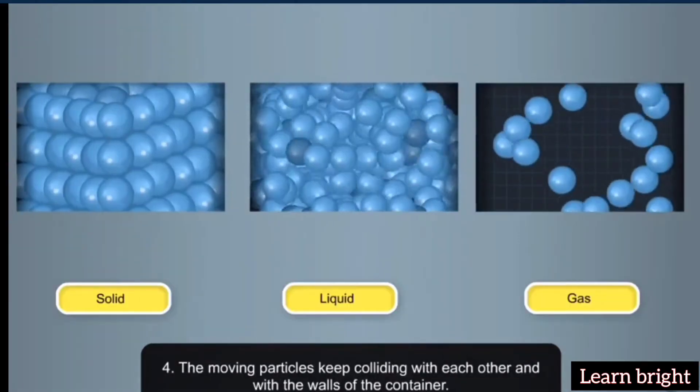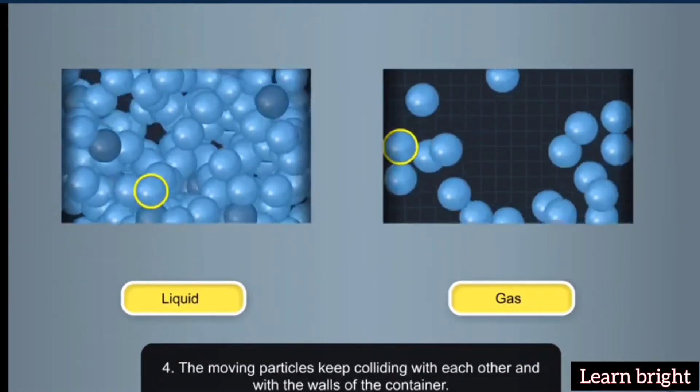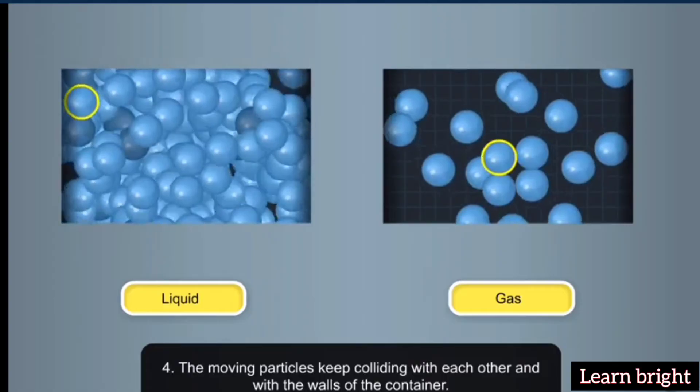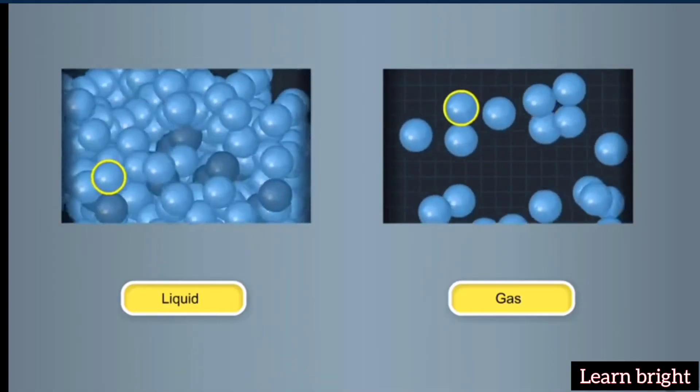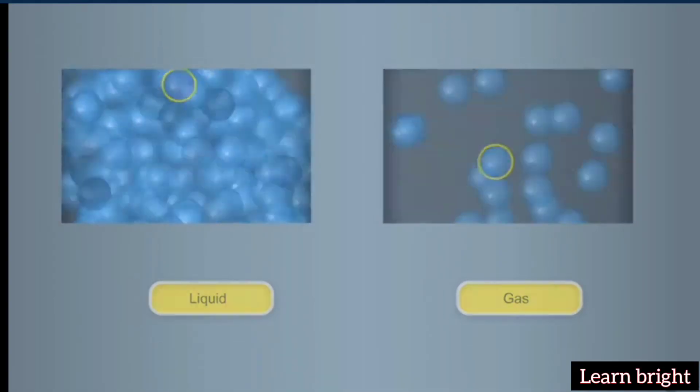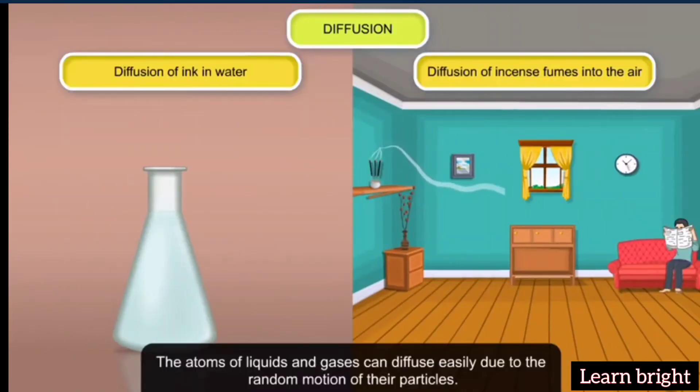Four: The moving particles keep colliding with each other and with the walls of the container. Now let us understand the following phenomenon based on the kinetic theory. Diffusion: The atoms of liquids and gases can diffuse easily due to the random motion of their particles.